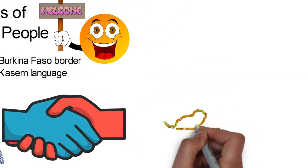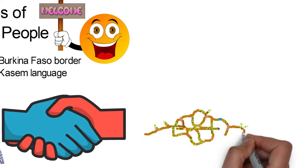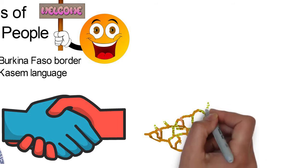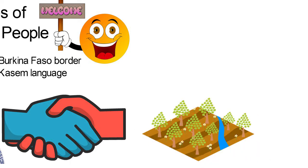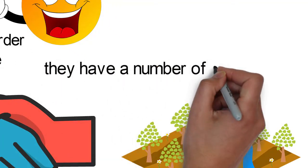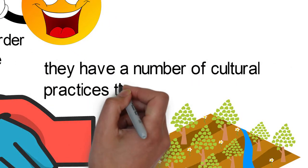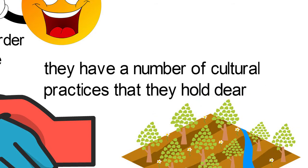In Kasena Nankana, individuals were not allowed to own land. Instead, the family heads were in charge of the land for the family. The Kasena Nankana people have a number of cultural practices that they hold dear.